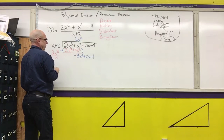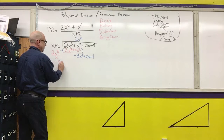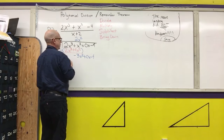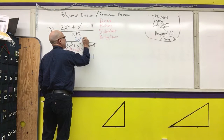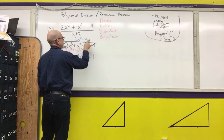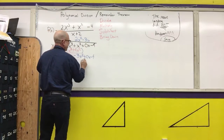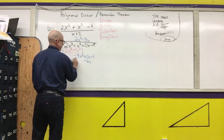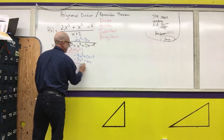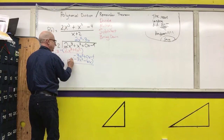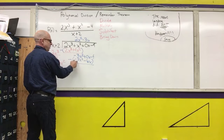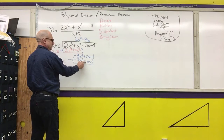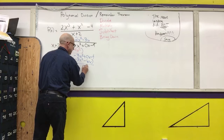Now we repeat this process. Divide — leading term divided by leading term. Negative 3x squared divided by x is negative 3x. Multiply: negative 3x times 2 is negative 6x, and negative 3x times x is negative 3x squared. Subtract — put parentheses around it with the subtraction sign. Any number minus itself is 0. 0 minus negative 6x is 0 plus 6x. Then bring down the negative 4.